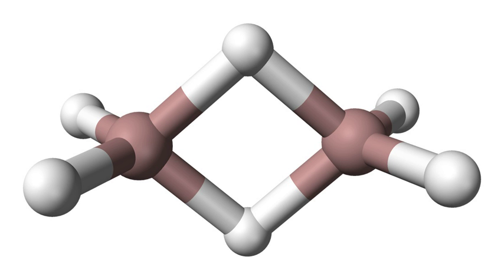GaCl3 plus 4 Me3SiH yields H2Ga(μ-Cl)2 plus 4 Me3SiCl. H2Ga(μ-Cl)2 plus LiAlH4 yields Ga2H6 plus LiCl. Digallane is volatile and condenses at −50 degrees Celsius into a white solid.